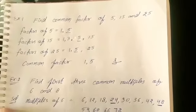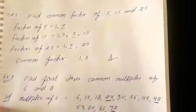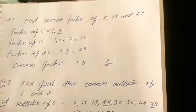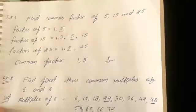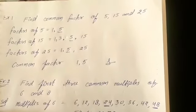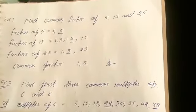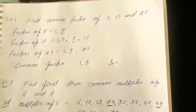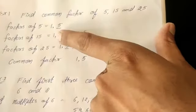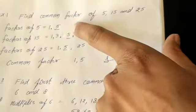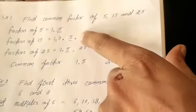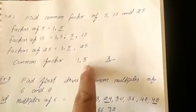Find the common factors of 5, 15, and 25. Write the factors of 5, 15, and 25. So there is 1 and 5 common in each factor, so common factors are 1 and 5.